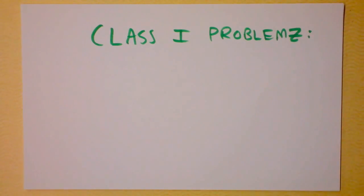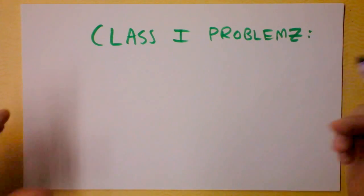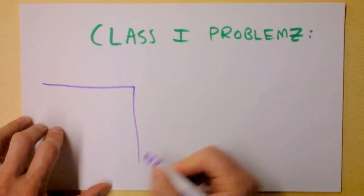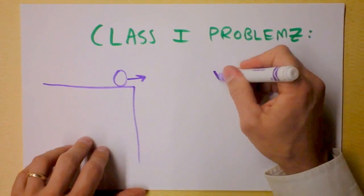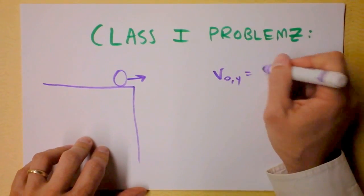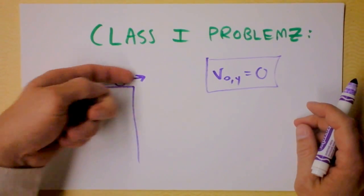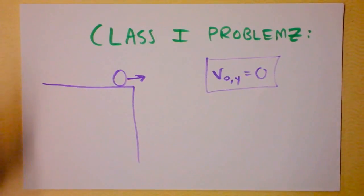Hello boys and girls, today I'd like to talk to you about what I call Class 1 problems. They are kinematics problems in two dimensions — projectile motion problems — in which the object is launched with no initial velocity in the y direction. This is the key statement of a Class 1 problem. This will be something rolling off of a table, a cliff, a train station, or something like that.